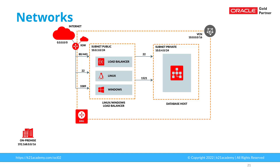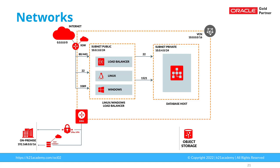Your end users might be accessing load balancers from the internet, and for that you need an internet gateway (IGW). You may also want to access OCI directly from on-premise, and this is where DRG — Dynamic Routing Gateway — comes into picture. You can connect from on-premise to OCI via DRG either using an IPSec VPN tunnel or using FastConnect. The final piece is the service gateway, which is used to communicate your OCI resources to another service like object storage, where you store database or Linux/Windows machine backups.